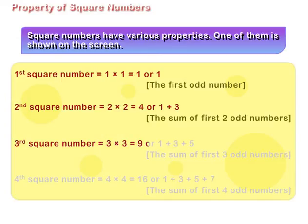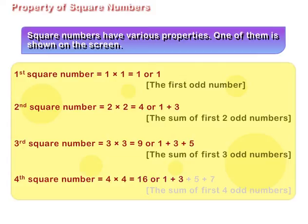Fourth square number is equal to 4 multiplied by 4, which is equal to 16, or 1 plus 3 plus 5 plus 7, the sum of first 4 odd numbers.